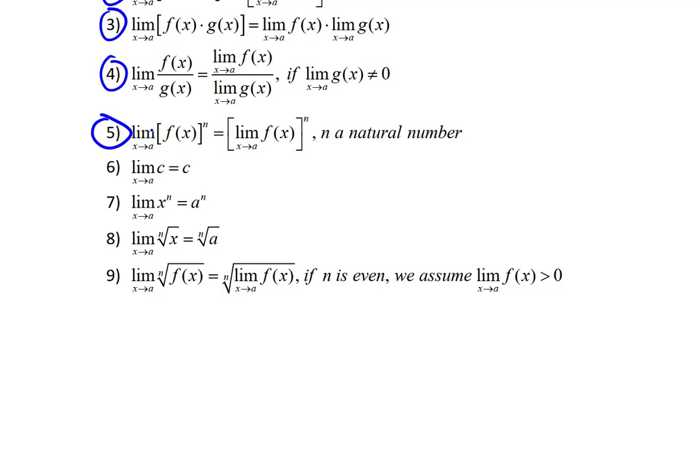Fifthly, we could say that the limit as x approaches a of f(x) to the nth power, so now this is some function all raised to an nth power, is going to be the same as taking the limit of that function and then raising that result to that nth power. And so this can be very convenient to utilize. Notice n is a natural number in this case. Natural numbers of course are positive integers.